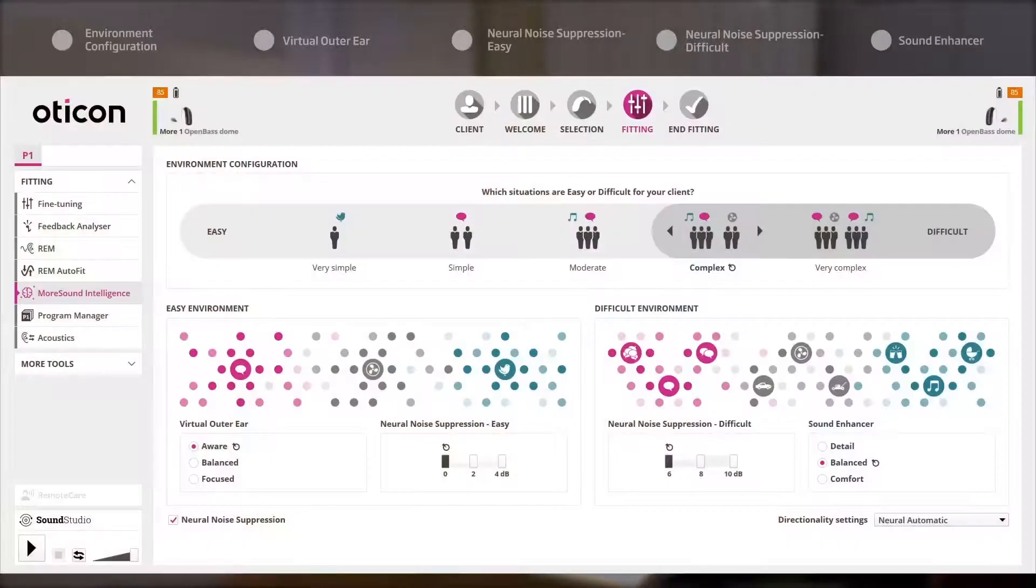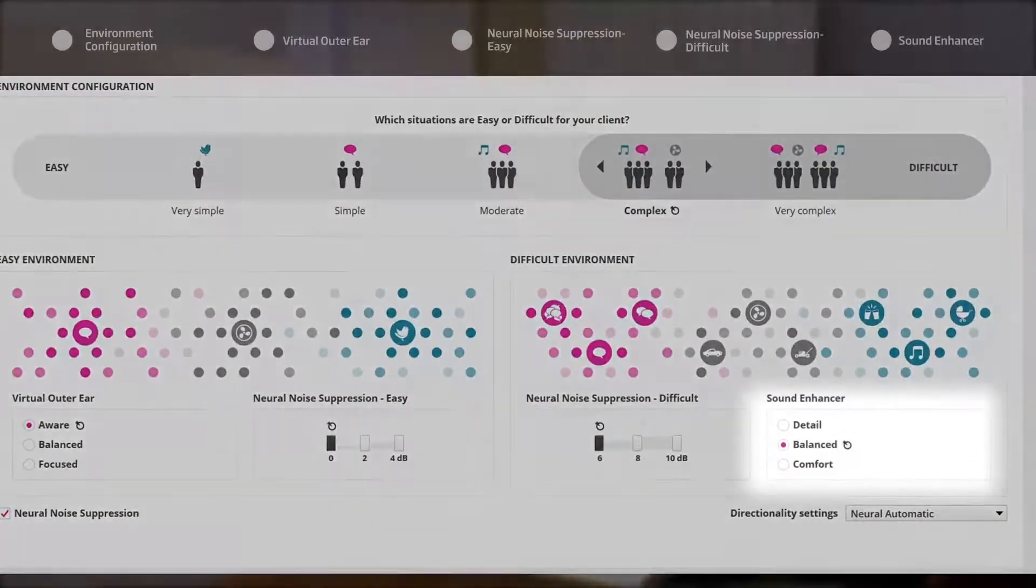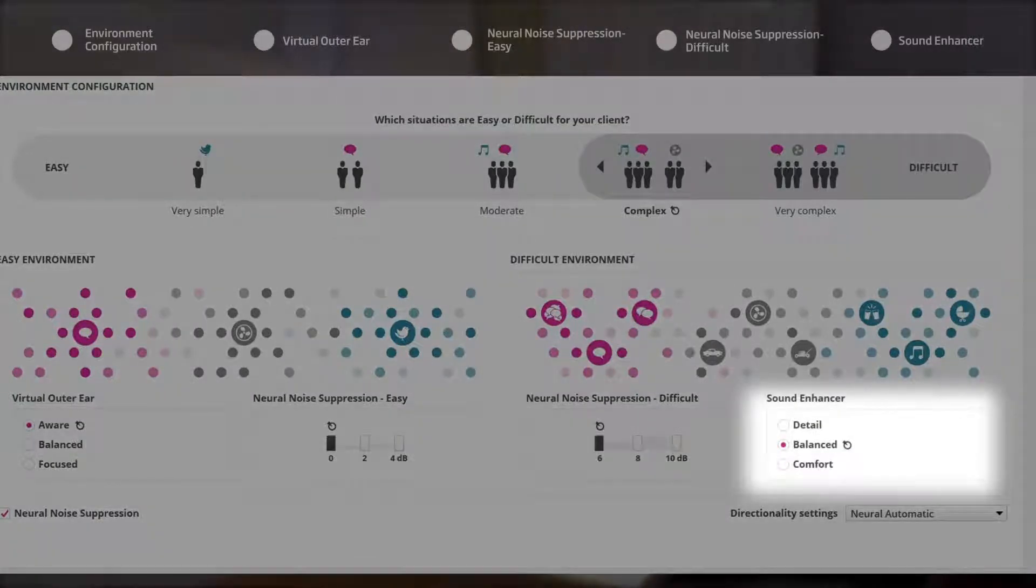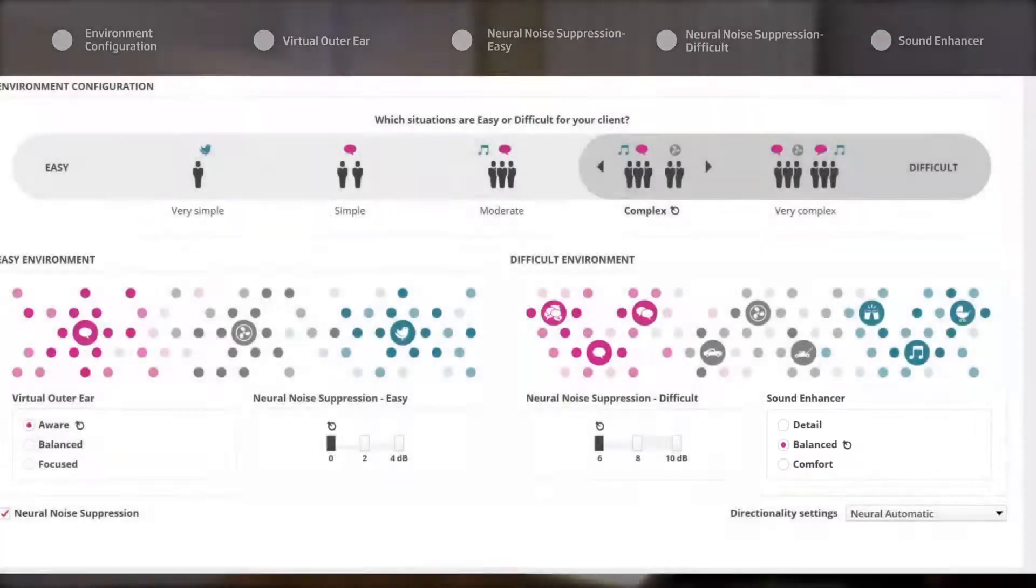Sound Enhancer ensures that the key speech region of 1 to 4 kilohertz is available to the user by adding more weight to this region than the low or higher frequencies. Due to this frequency shaping, a slightly greater contrast will be created between the speech and noise when sound is added to the signal.